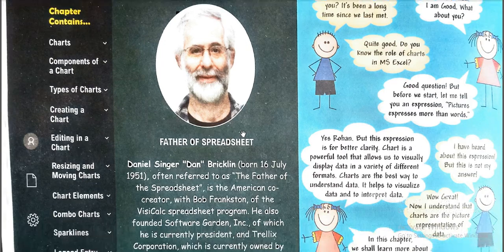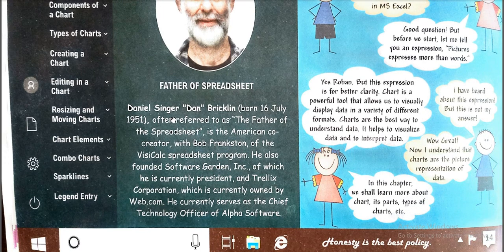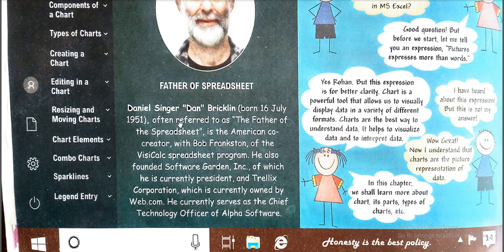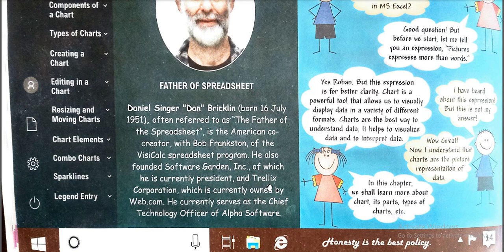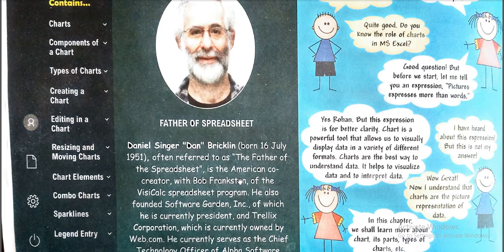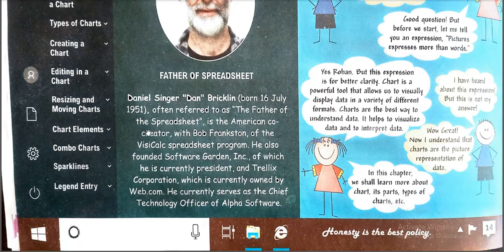Father of spreadsheet, Daniel Singer Dan Bricklin, born in 16 July 1951, often referred to as the father of the spreadsheet, is the American co-creator with Bob Frankston of the VisiCalc spreadsheet program. He also founded Software Garden, of which he is currently president, and Trellix Corporation, which is currently owned by Web.com. He currently serves as chief technology officer of Alpha Software. Here is some information about father of spreadsheet and his name is Dan Bricklin.